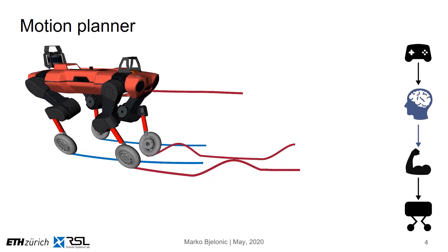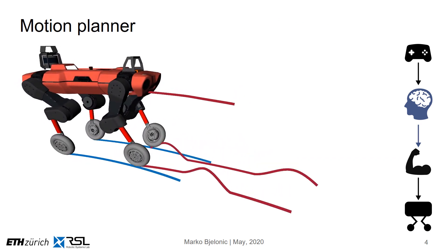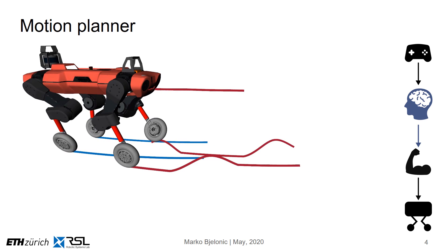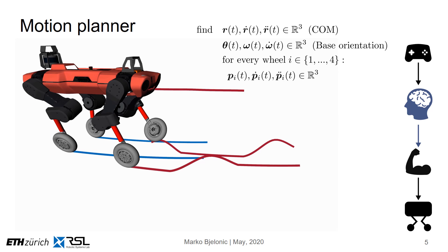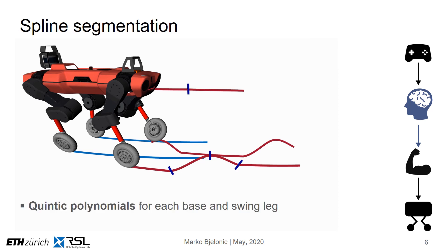As shown in this animation, we are interested in finding feasible trajectories of the base and all four wheels over a predefined time horizon into the future. The motion planner optimizes over the center of mass position, velocity, and acceleration. Similarly, we find the equivalent orientations and their derivatives at each point in time. Moreover, the trajectory of each wheel needs to be determined. We accomplish this by segmenting the trajectories into several splines, defining quintic polynomials for each base and swing leg.